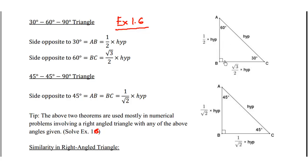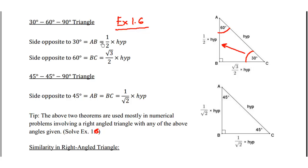Suppose there is a right angle triangle where angle B is 90 degrees, angle C is 30 degrees, then we have angle A as 60 degrees. This triangle ABC is a 30, 60, 90 degree triangle. According to the theorem, the side opposite to 30 degrees — in this case side AB — is equal to half multiplied by the hypotenuse.